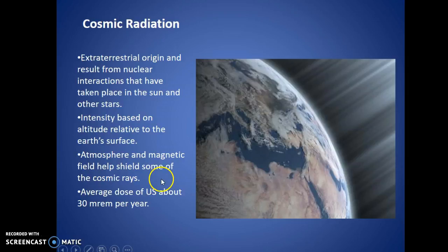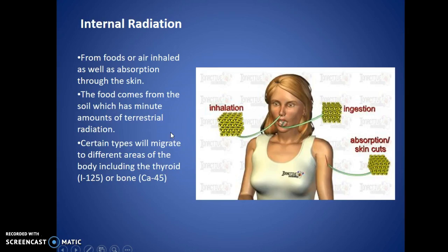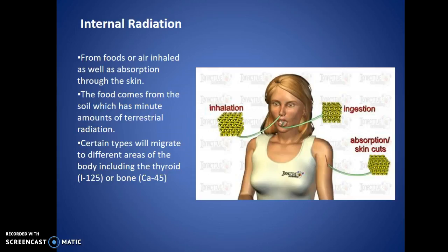The Earth's magnetic field helps shield some cosmic rays, but not all. The average dose in the U.S. is about 30 millirems per year — very small. Internal radiation comes from foods or air inhaled, as well as absorption through the skin, usually through eating since food comes from the soil. Once inside the body, radiation is more damaging than an outside source, because your skin provides some protection. Certain types migrate to different areas of the body, including the thyroid, which is more sensitive to the effects of radiation than bone.